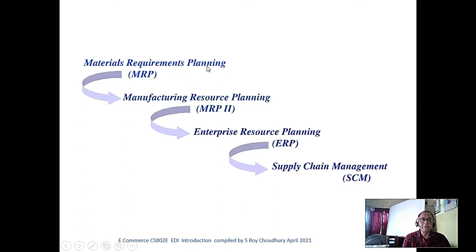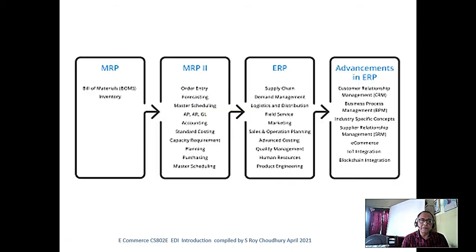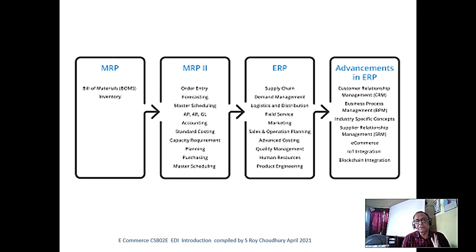It starts from Materials Requirement Planning software in the 60s and 70s. Then with some involvement of accounts, it became MRP 2. Then ERP — ERP is full-fledged: it has everything — human resource development, sales, logistics — everything is included, but not the outside environment. That comes later.